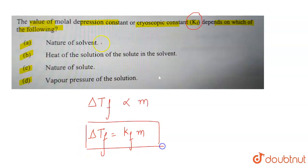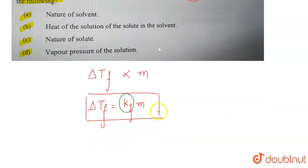This Kf is known as the molal depression in freezing point constant or the cryoscopic constant. And this Kf depends only and only on the nature of solvent.